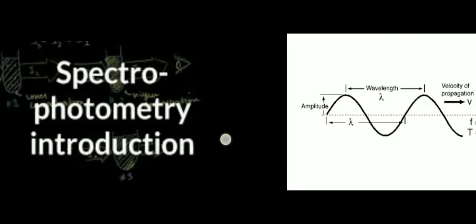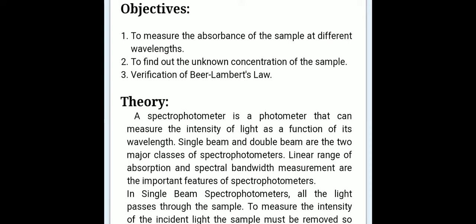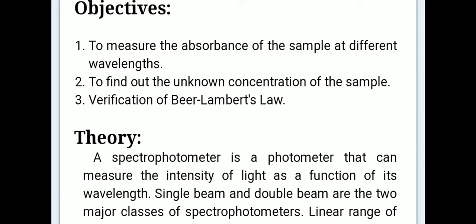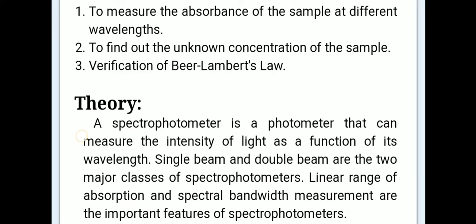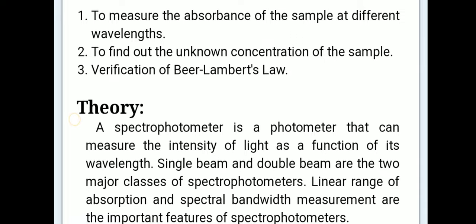Now moving to the objectives of spectrophotometry. The first objective, as we have discussed, is to measure the absorbance of light of the sample at different wavelengths. The second is to find out the unknown concentration of the sample, and the third is verification of Beer's-Lambert's law. We will discuss all three points and the instrumentation of the spectrophotometer one by one.